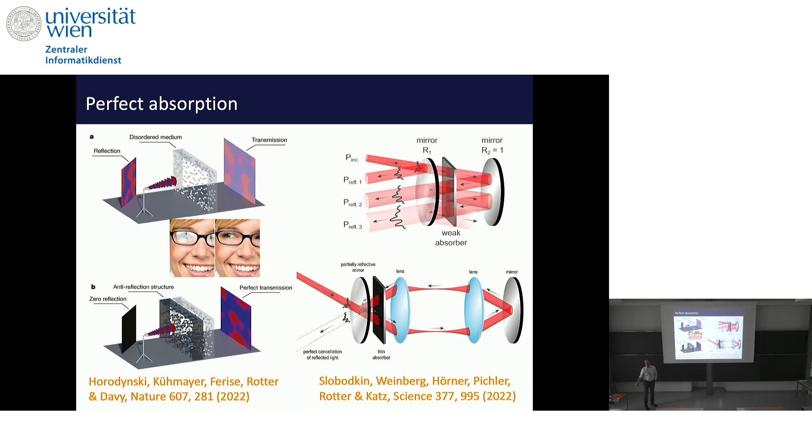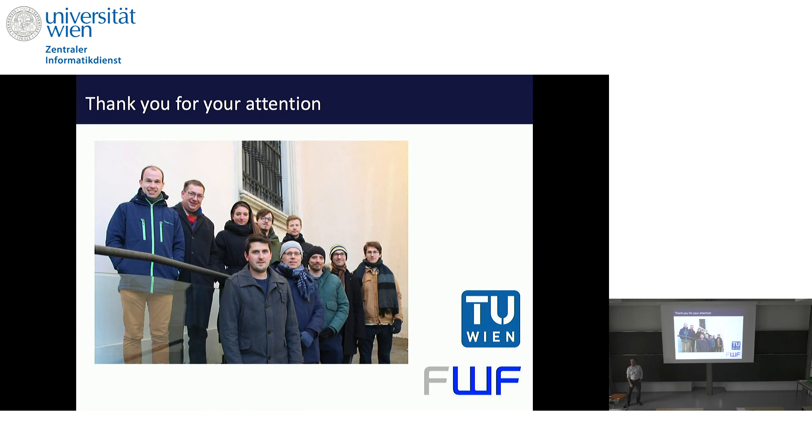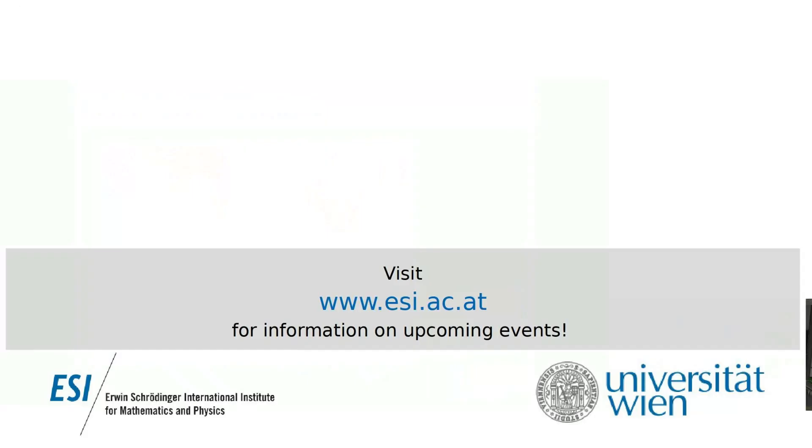The solution we found to kill any back reflection is to actually embed this absorber into a so-called degenerate 4F cavity, where the light beam that gets back reflected gets perfectly cancelled by the beam that enters the cavity and then destructively interferes with the outgoing beam. This works for any incoming angles and makes out of every weak absorber a coherent perfect absorber for any incoming wave fronts. I see that the chairman is already there. It's time to conclude, and this is a picture of my group, and I thank you very much for your attention. Thank you very much.